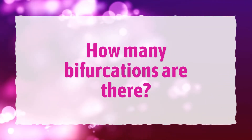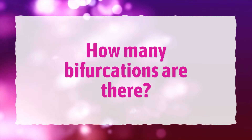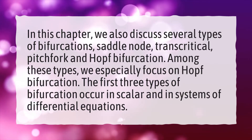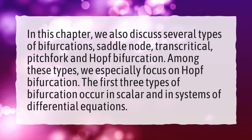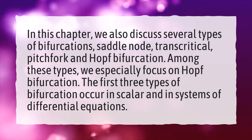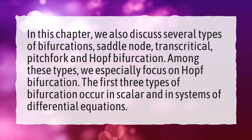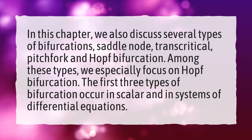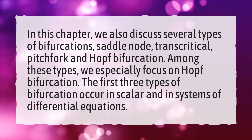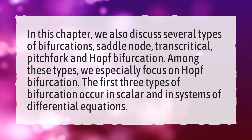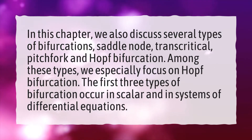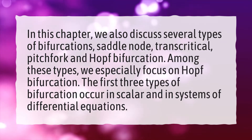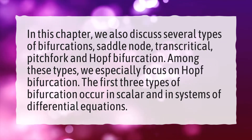How many bifurcations are there? In this chapter, we also discuss several types of bifurcations: saddle node, transcritical, pitchfork, and Hopf bifurcation. Among these types, we especially focus on Hopf bifurcation. The first three types of bifurcation occur in scalar and in systems of differential equations.